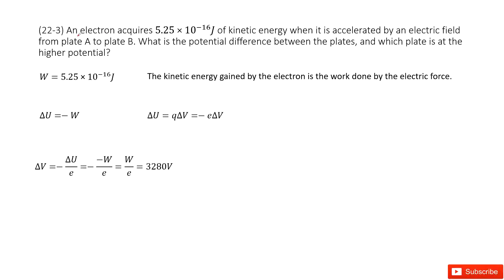So there we have an electron. It has kinetic energy when it is accelerated by an electric field from A to B. That means the work the electric field does to this electron is W. And what is the potential difference between these two planes?